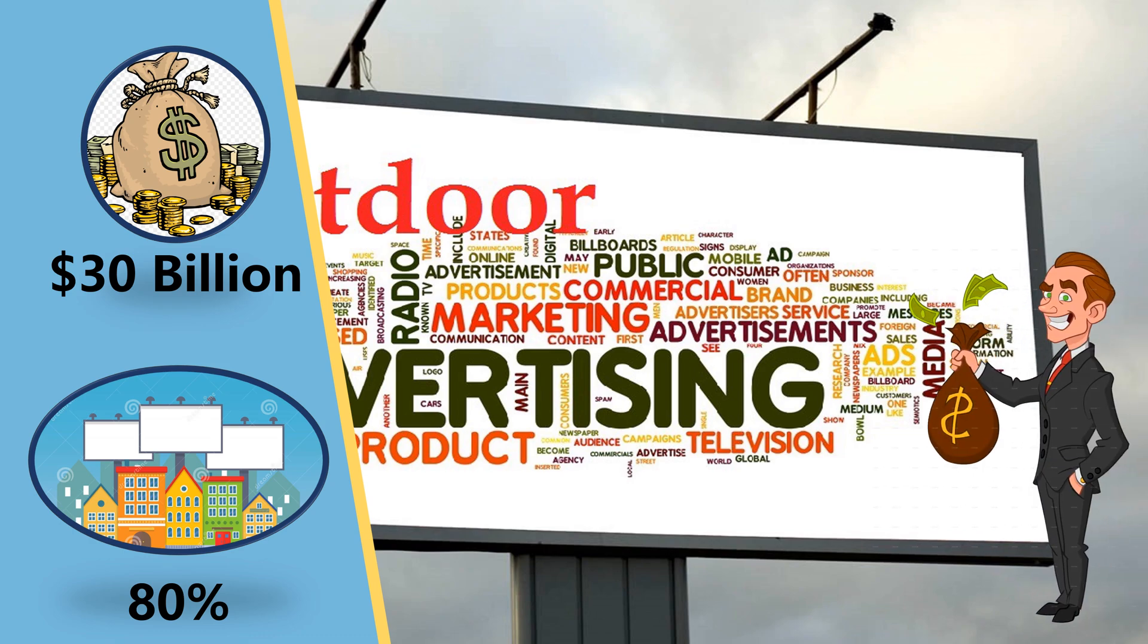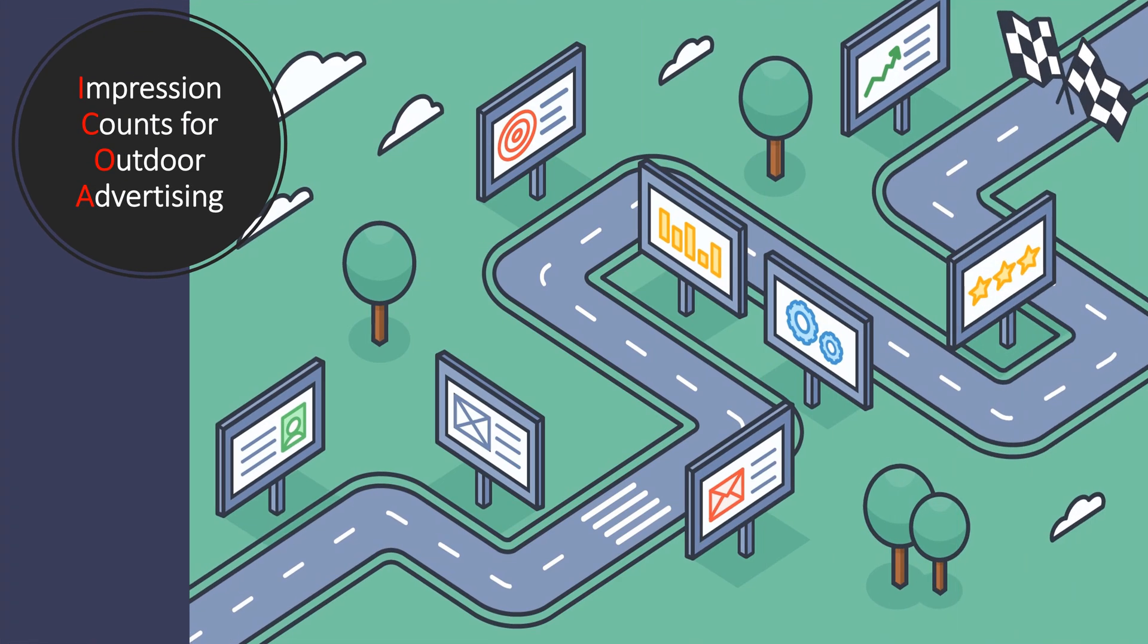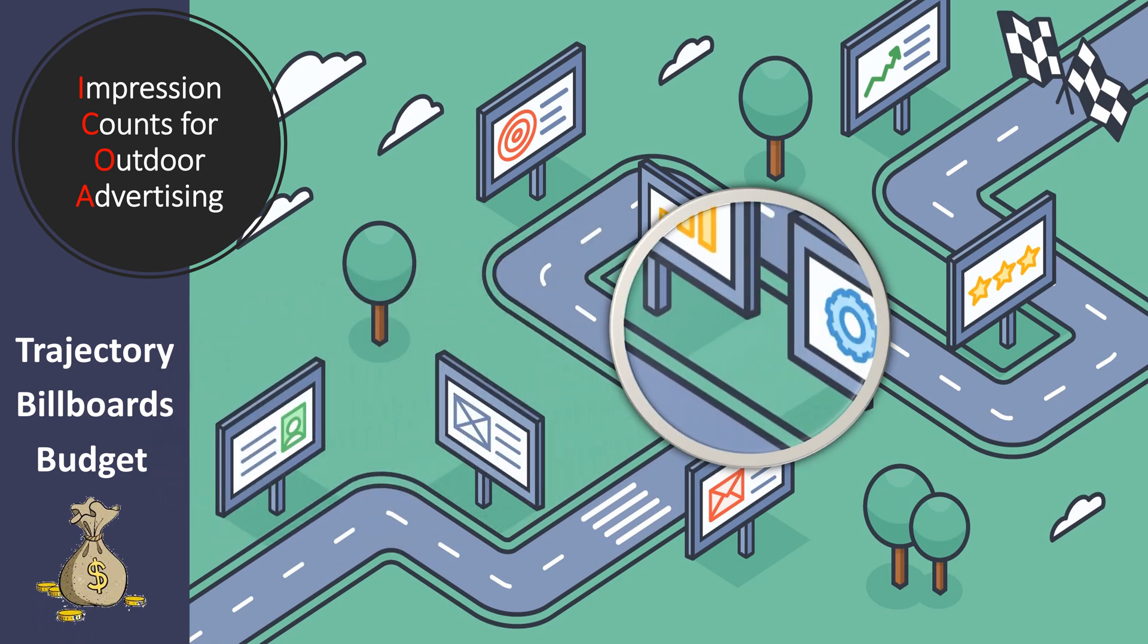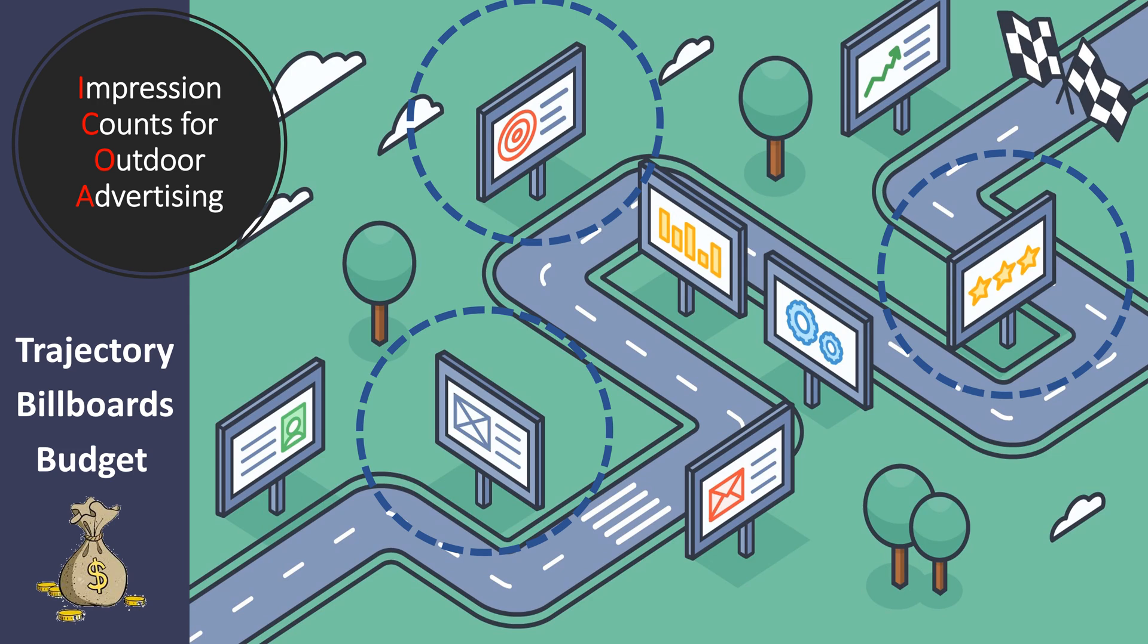The question is, how do we improve the effectiveness of the advertisement? To address this question, we introduce the impression counts for outdoor advertising problem. Given a trajectory database, a billboard database, and a budget, we aim to find the optimal deployment strategy which maximizes the overall advertising influence.